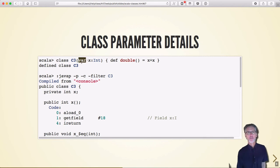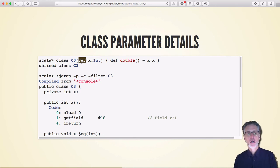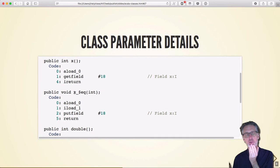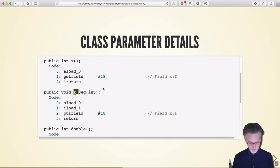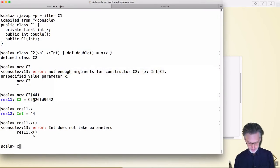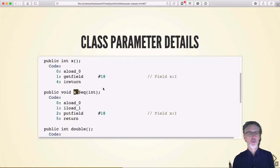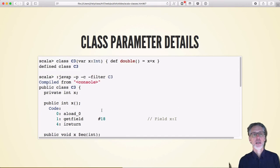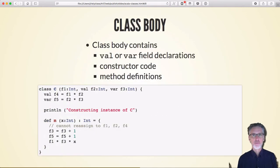If we make something a var — a variable field — we get not only the getter method but also a setter, written as x_equals. So we have x and x_equals, which gets or assigns the value of x. The getter uses get field and the setter uses put field; the actual field itself is hidden.